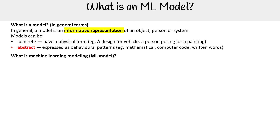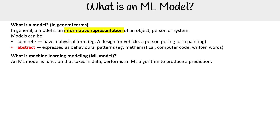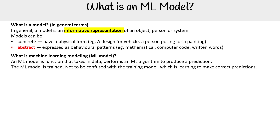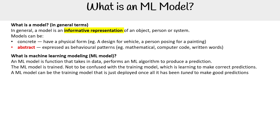So what is a machine learning model? An ML model is a function that takes in data, performs a machine learning algorithm, and produces a prediction. The machine learning model is trained — not to be confused with the training model, which is learning to make correct predictions. An ML model can be the training model that is deployed once it has been tuned to make good predictions.